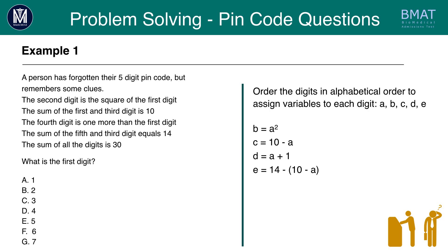We're also told the sum of all the digits is 30. So A plus B plus C plus D plus E equals 30. What's really good here is that B, C, D, and E are all expressed in terms of A. So we can form a quadratic equation using these terms. We have A to represent A, A squared to represent B, 10 minus A to represent C, A plus 1 to represent D, and 14 minus brackets 10 minus A to represent E. They all add up to 30.